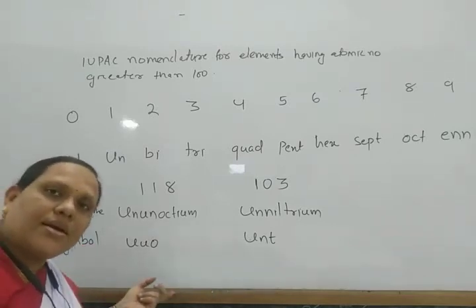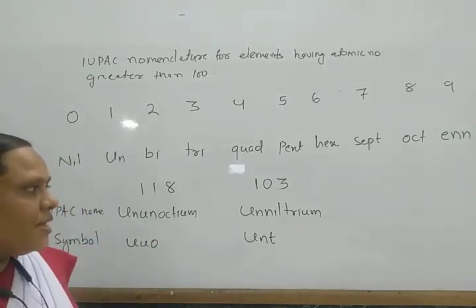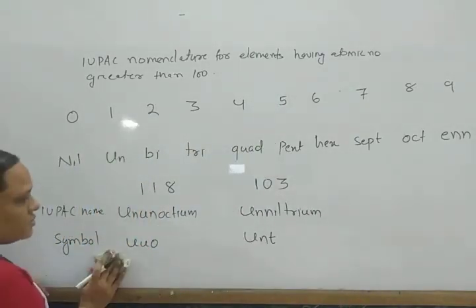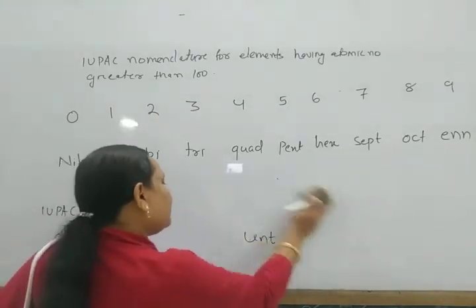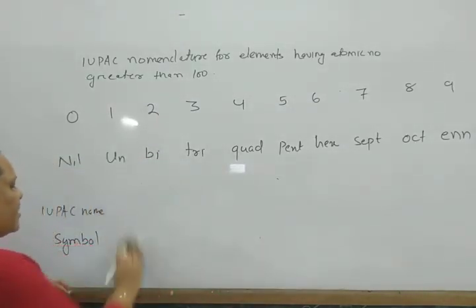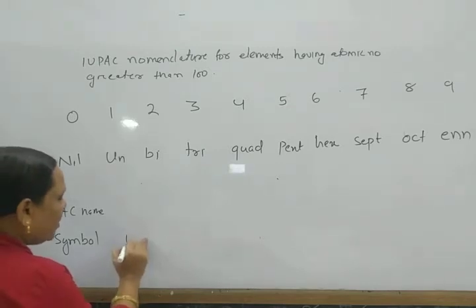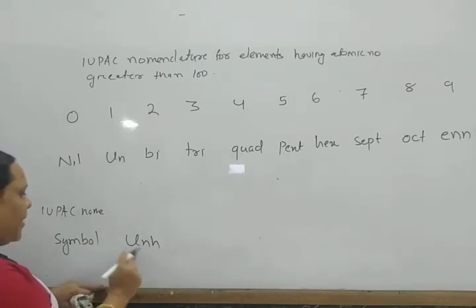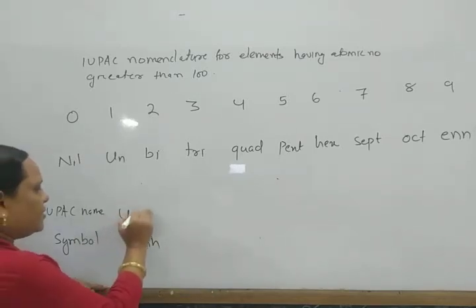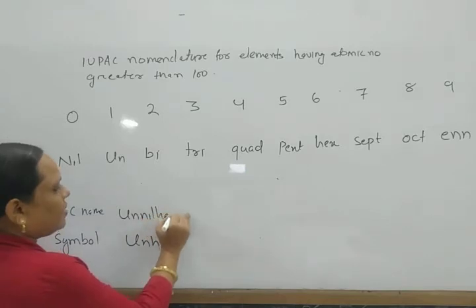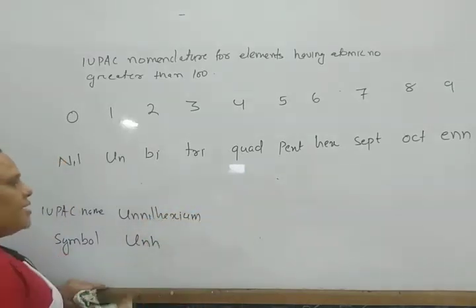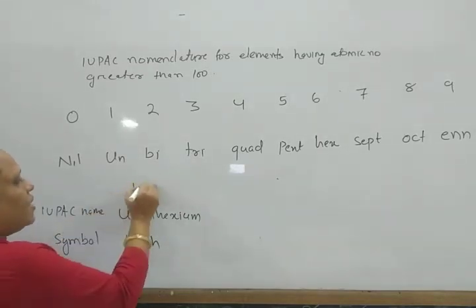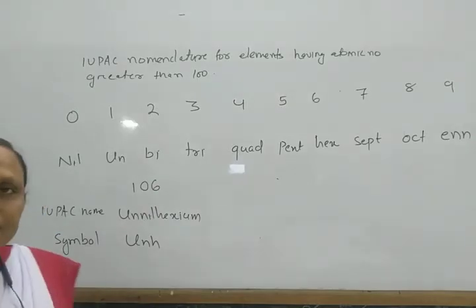From the symbol, you can also determine the name and atomic number. For example, if the symbol given is Unh, then the IUPAC name is Unnilhexium and its atomic number is 106.